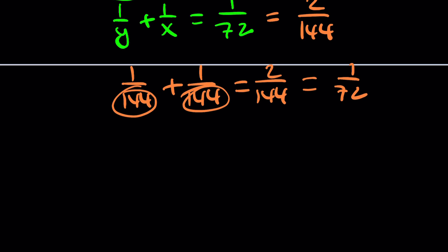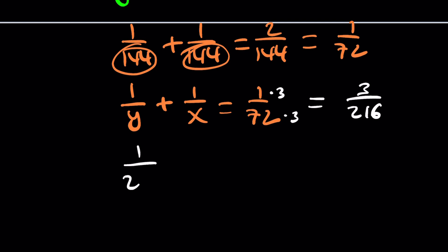But can we find more solutions? Sure, maybe you can try expanding differently. Instead of multiplying by 2, can you multiply by 3, maybe? This will give you 3 over 216. And maybe you can break it down into 1 over 216, but the other one has to be 2 over 216.